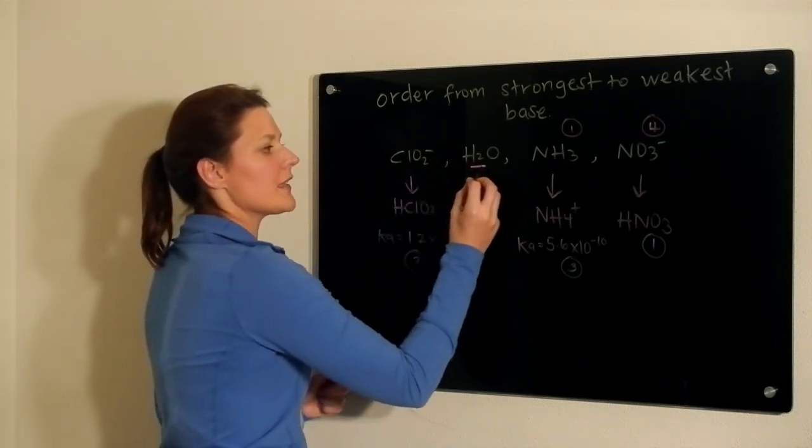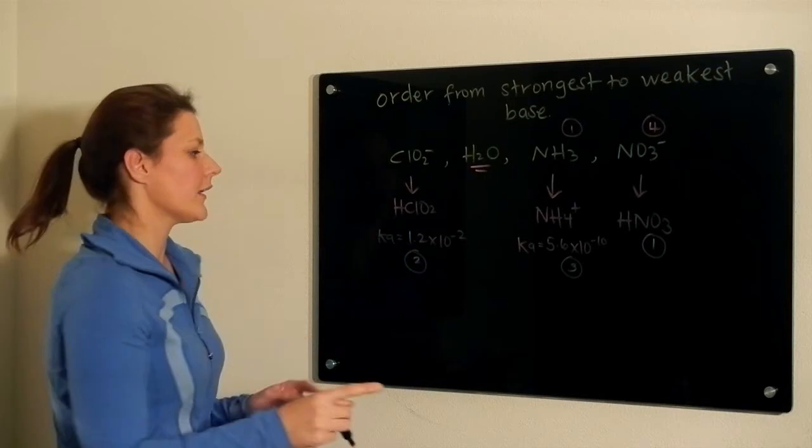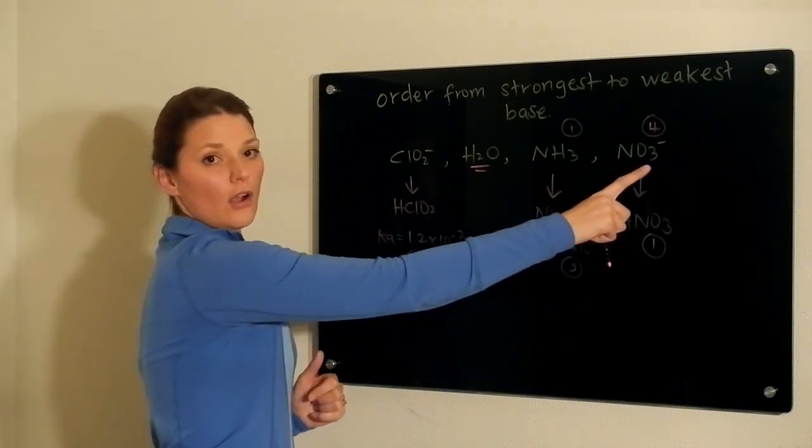So that means this here is basically going to be the dividing line between the weak conjugates and the strong conjugates.